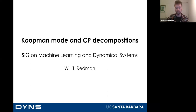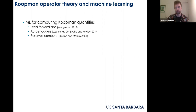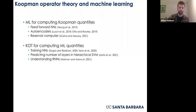The main topic of today's talk is on the intersection between Koopman operator theory — a dynamical systems theory — and machine learning. There have been a number of talks for this group about machine learning for computing relevant Koopman quantities, which has been very popular in the past three or four years. People have found they can use feedforward neural networks, autoencoders, and even reservoir computers to estimate these Koopman quantities.